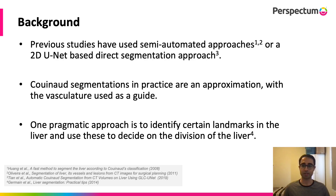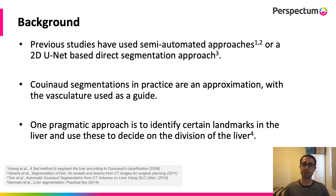Some previous methods for obtaining Couinaud segmentations have been reported, some of which have been automated, but a recent approach has been to use a U-Net to directly segment the regions themselves. It should be noted that Couinaud segmentations in practice are only an approximation and the vasculature is used as a guide. One pragmatic approach, discussed in the paper by Germaine et al., is to identify certain vasculature-based landmarks and use these to create planes that divide the liver into the Couinaud segments.